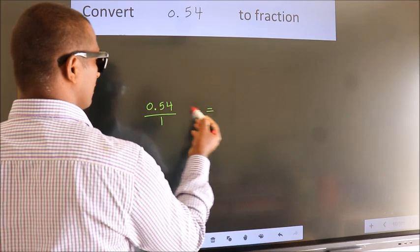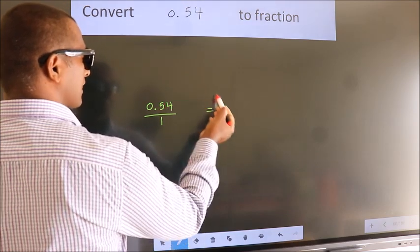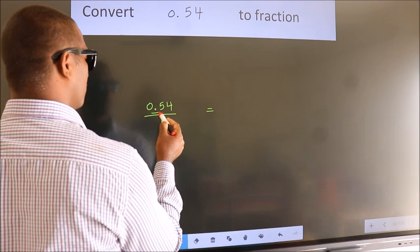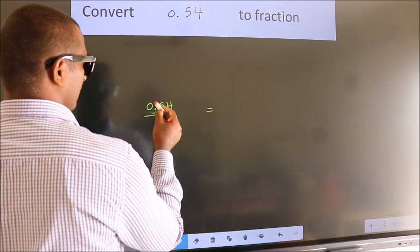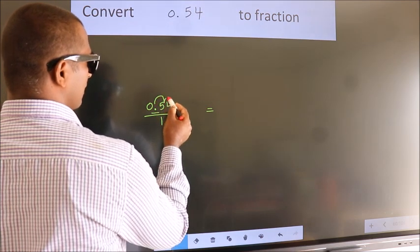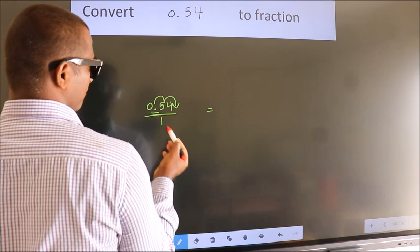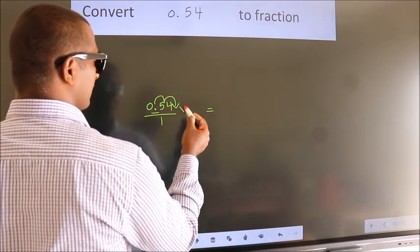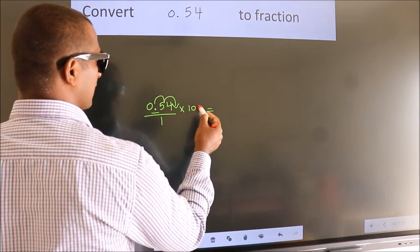Now to convert this to a fraction, we should move this decimal after 2 numbers. To move this decimal after 2 numbers, we should multiply it with 100.